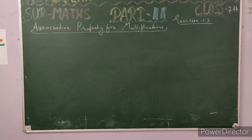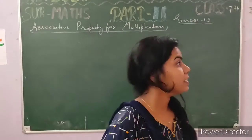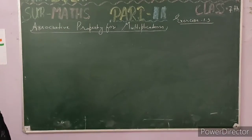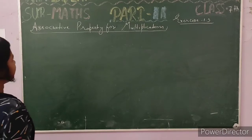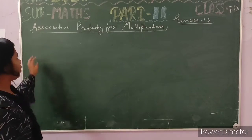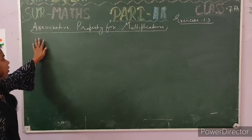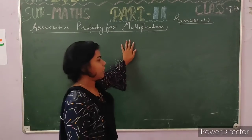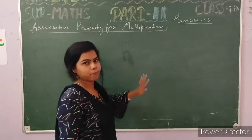Good morning students of class 7th. Today is part 11: associative property for multiplication.